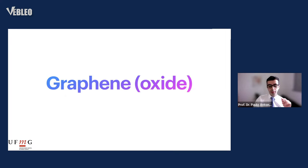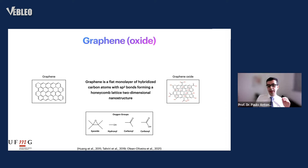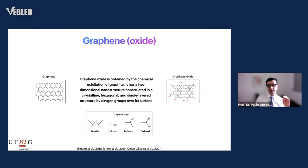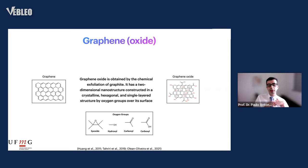Talking about graphene and graphene oxide: graphene is a flat monolayer of sp2-hybridized carbon atoms forming a honeycomb lattice — a two-dimensional nanostructure, essentially a flat sheet. Graphene oxide is obtained by the chemical exfoliation of graphene. It also has a two-dimensional nanostructure, constructed in a crystalline, hexagonal, single-layered structure decorated with oxygen groups over its surface.